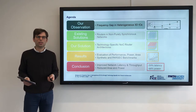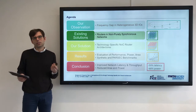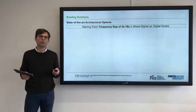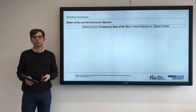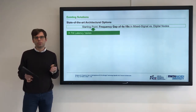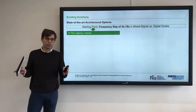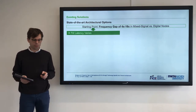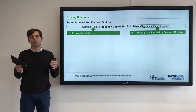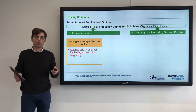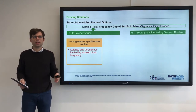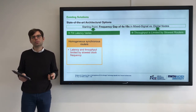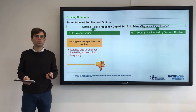Starting from our observation that there is a frequency gap in heterogeneous 3D ICs, let's look at existing solutions. The starting point is a frequency gap of 4 to 16x with mixed signal versus digital nodes, meaning flit latency varies — a flit sent in one layer over the same physical distance will have a different latency than in the other layer. Your throughput is also limited by the slowest router. The conventional baseline approach would be to apply a homogeneous synchronous router, but your latency and throughput are then limited by the slowest clock frequency in your network.